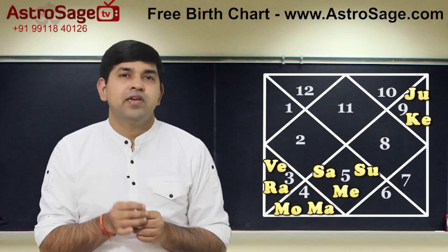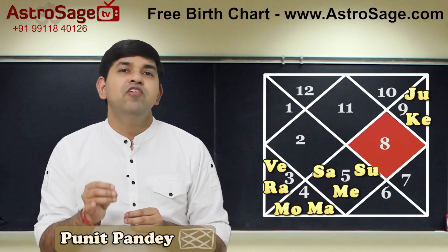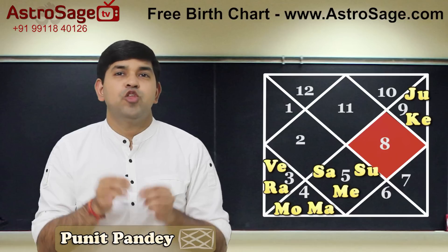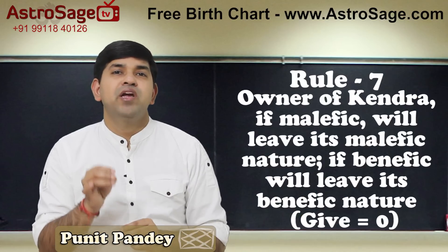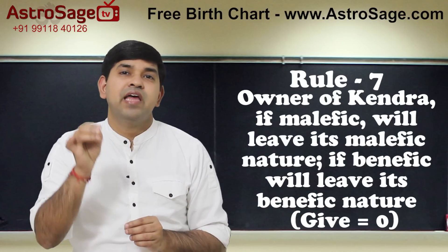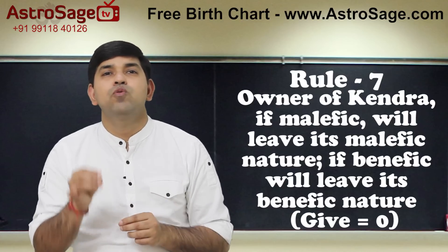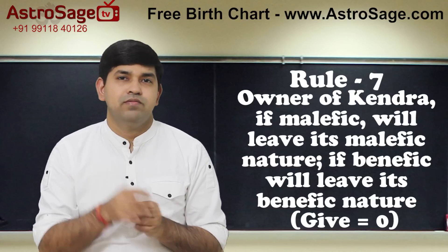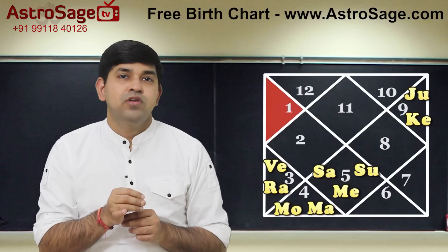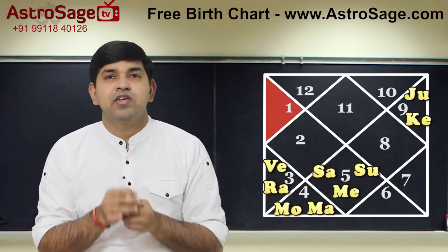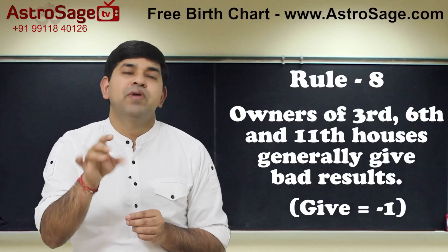Mars is a cruel planet, and being the owner of a kendra it will shed its malefic nature — becoming neutral, that is neither malefic nor benefic. So let us give 0 to rule number 7. As Mars is the lord of the third house it will give malefic results, so minus 1 to rule number 8.